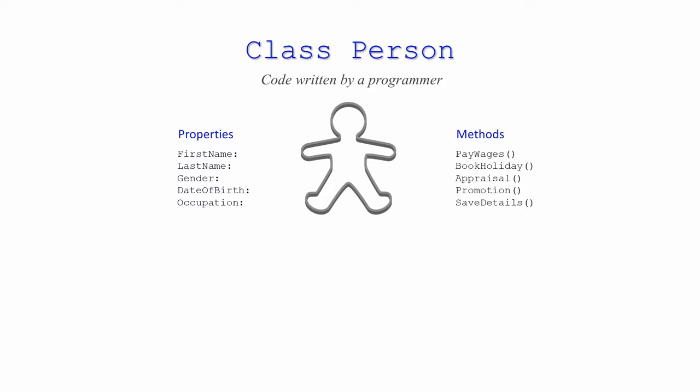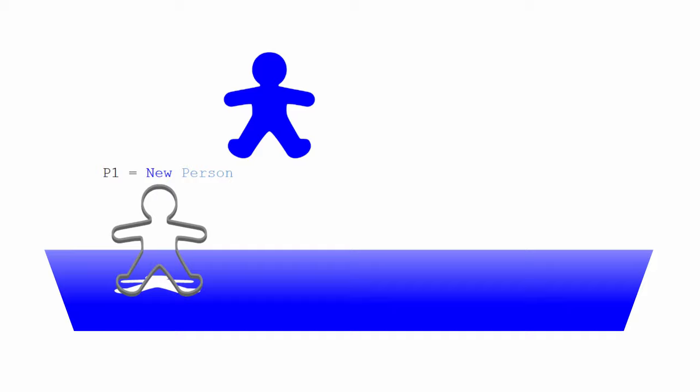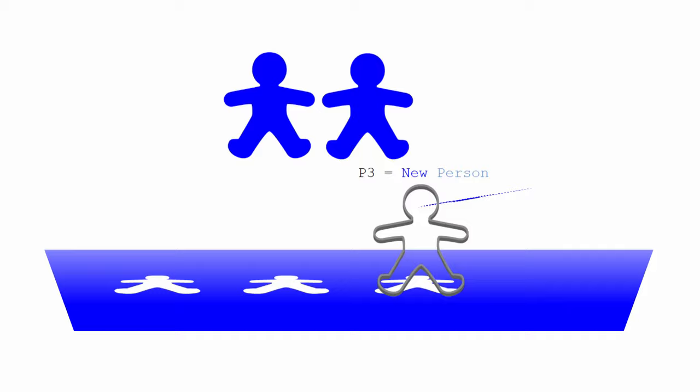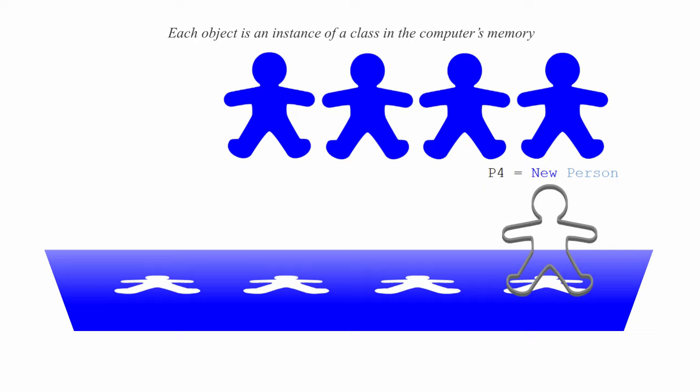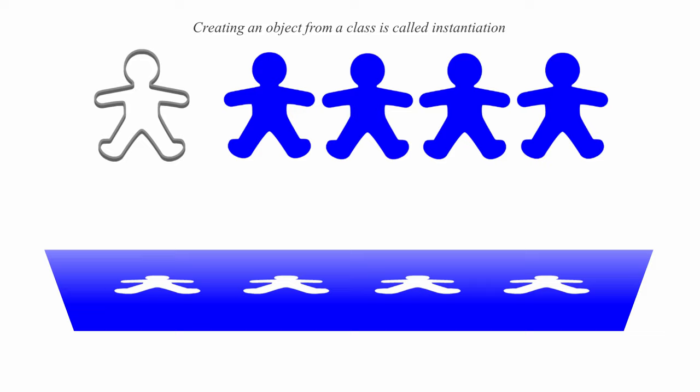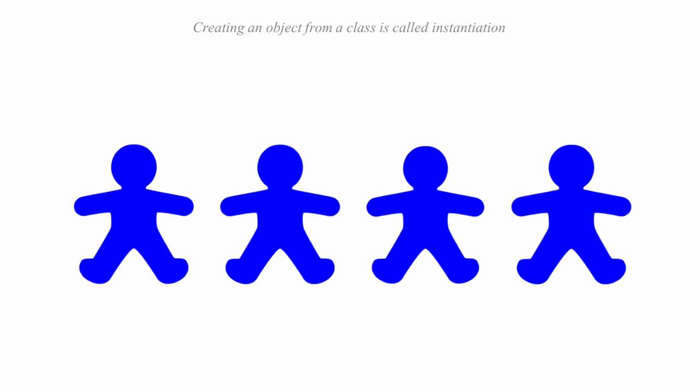A class is a template for creating objects and it's often compared with a pastry cutter because once it's been written, it can be used to create many objects of the same type. In fact, a class is sometimes referred to as a type. Each object is an instance of a class in the computer's memory. Creating an object from a class is therefore known as instantiation. Once these objects have been created, their properties can be assigned values, making each object of the same type a unique entity.